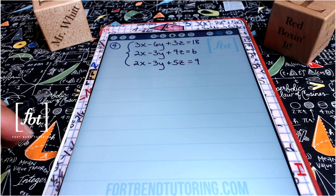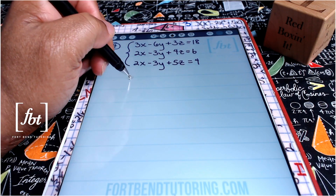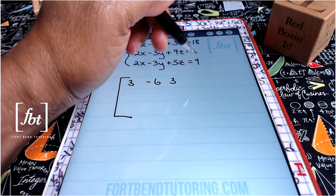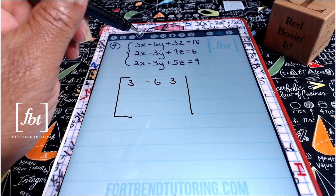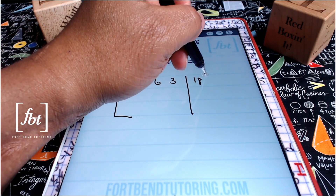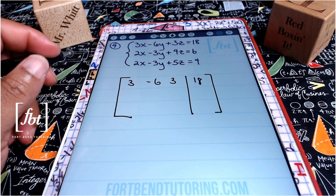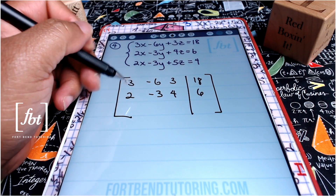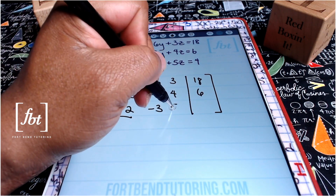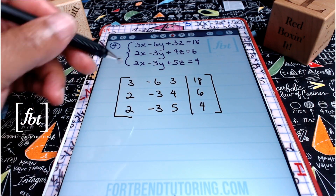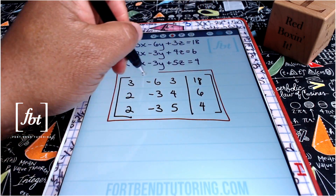For problem number four, we have another system of equations with three variables and three equations. Opening up that matrix, we'll have three, negative six, three, and then our vertical bar separating the coefficients from the constants, with 18 closing off that first row. For the second equation, we'll have two, negative three, four, and six. For the last equation, you'll have two, negative three, five, and four. This completes your augmented matrix for problem number four — red box it.